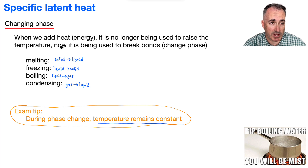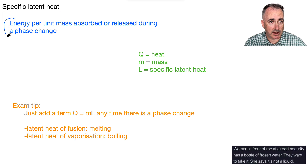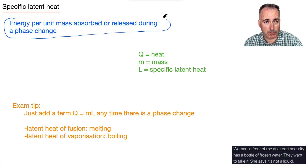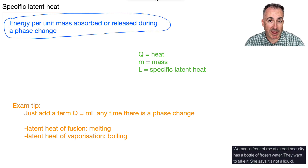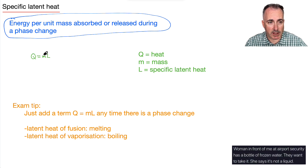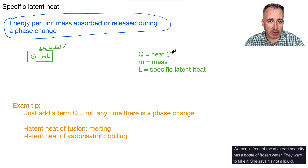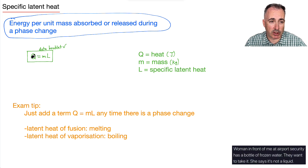With specific latent heat, it's related to changing the phase. So we have a definition: it's the energy per mass absorbed or released during a phase change. We have an equation for it as well: Q equals M times L. And this is in your data booklet, so you don't have to memorize it. Now, what are the units? Well, Q is heat — that's in joules. M is mass, which is in kilograms. And then specific latent heat L would be Q over M, so that must be joules per kilogram.